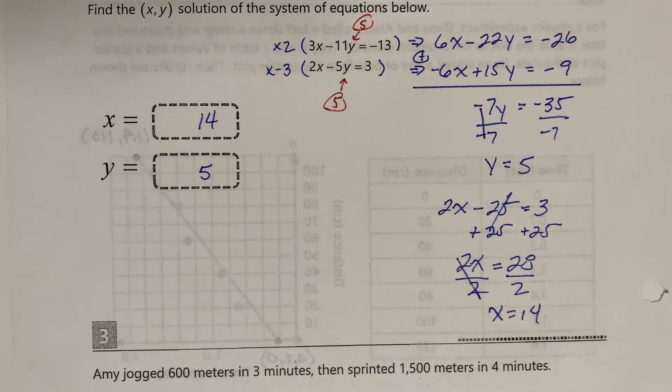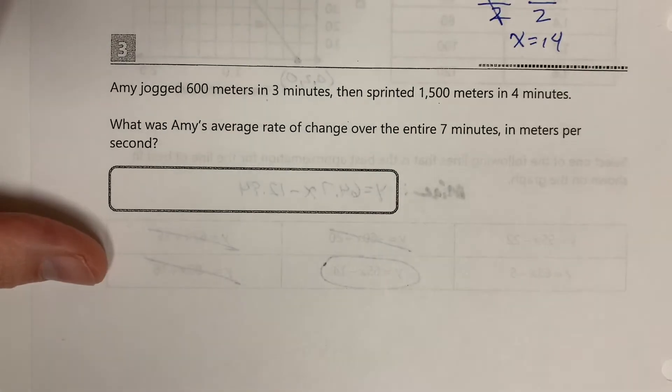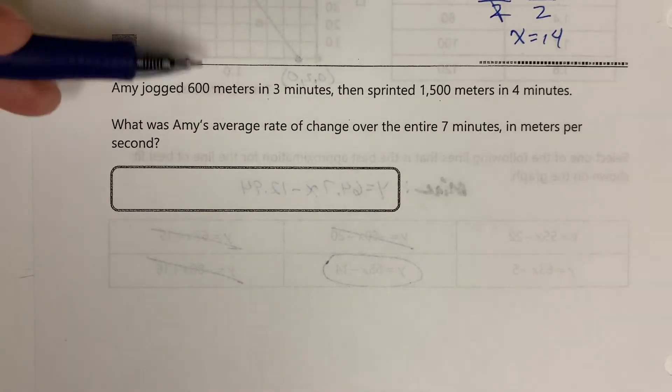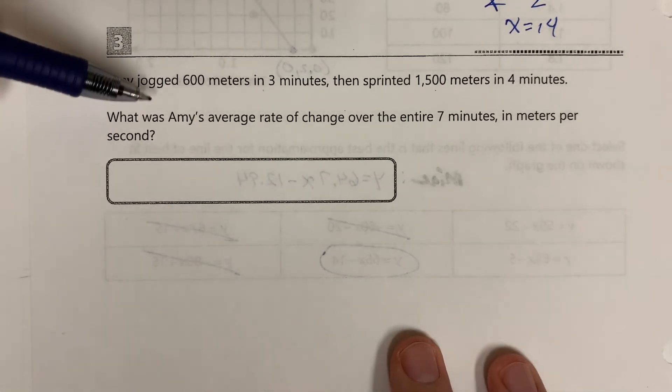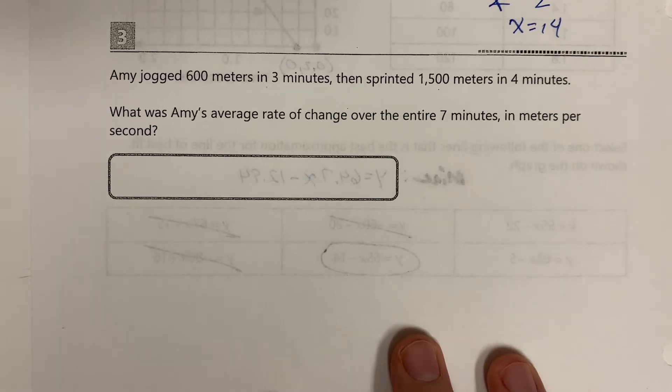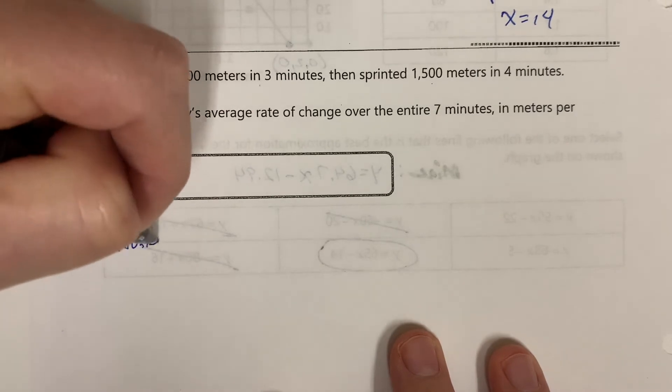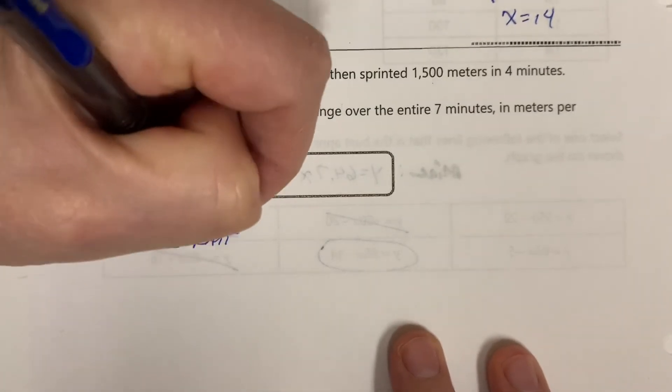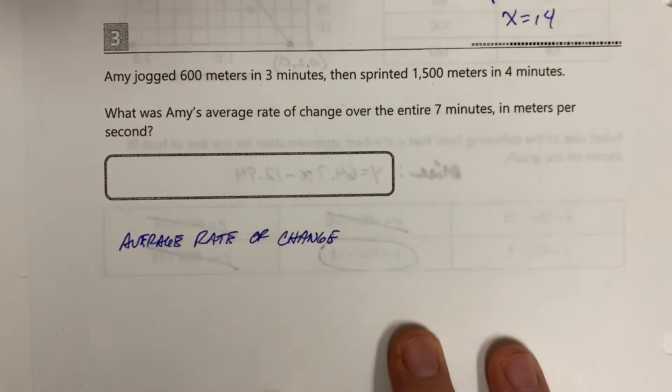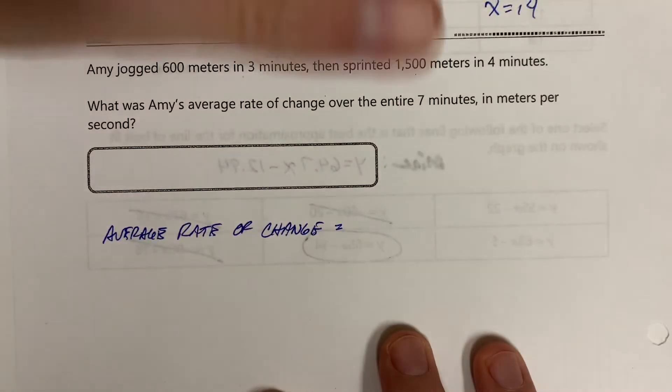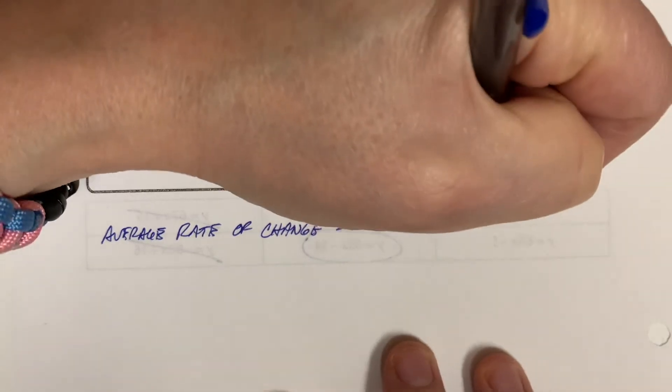Number three is average rate of change. It says Amy jogged 600 meters in three minutes, then sprinted 1500 meters in four minutes. What was Amy's average rate of change over the entire seven minutes in meters per second? Average rate of change is equal to the change in the dependent variable divided by the change in the independent variable.